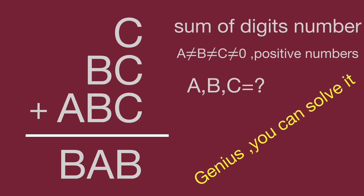Hello, you are watching Bala Hippo Math Genius Readers. We have an interesting question. There are three numbers: c, bc, and abc. Add up these three numbers to equal the three-digit number bab. The conditions are: a not equal to b, not equal to c, not equal to zero, and they are all positive numbers. Find the numbers for a, b, and c. Pause the video and solve it while you are ready, then keep watching to get the result.